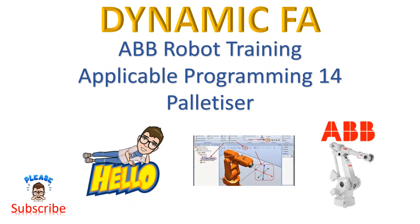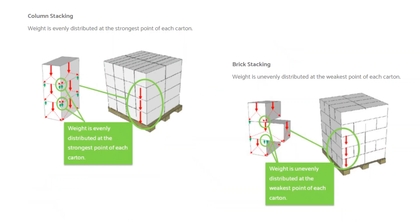I want to stop and have a look at the pallet stacking and variables for palletizing. The pallet stacking is a column stack. Column stacking — as you can see, the four corners, one, two, three, four corners, they are the strongest point of the carton. They just line up from top to bottom, which means it can support maximum strength of the carton.